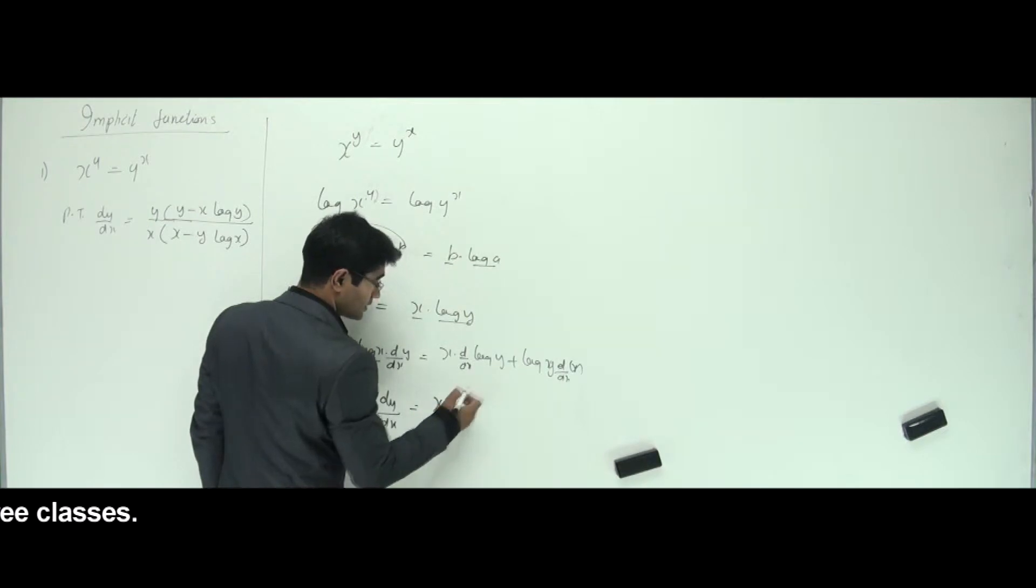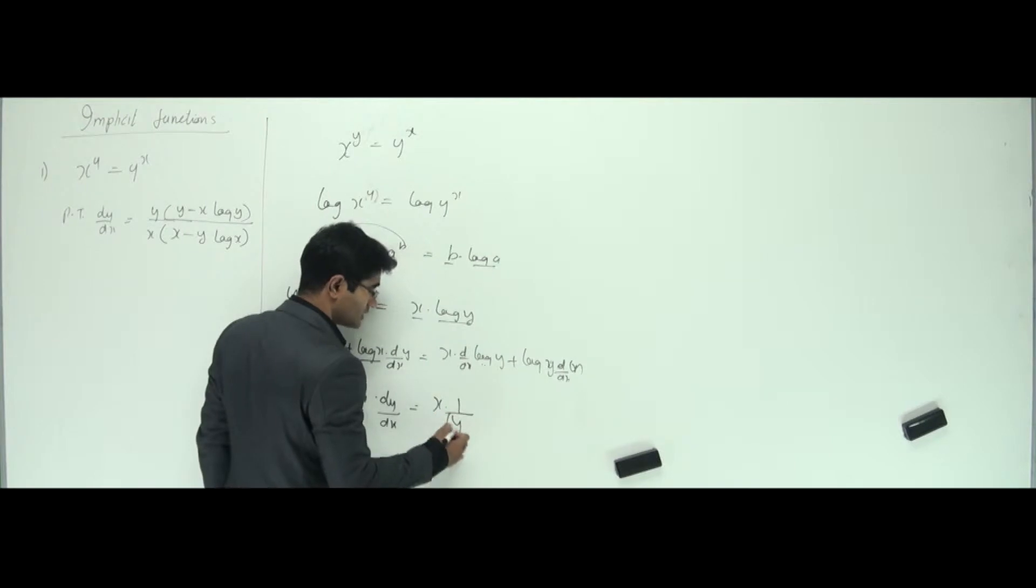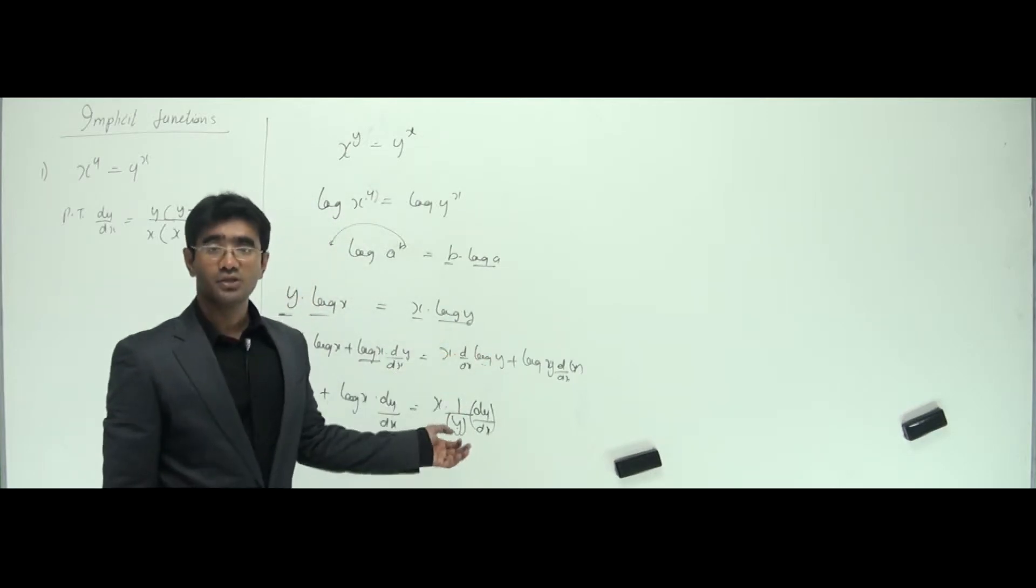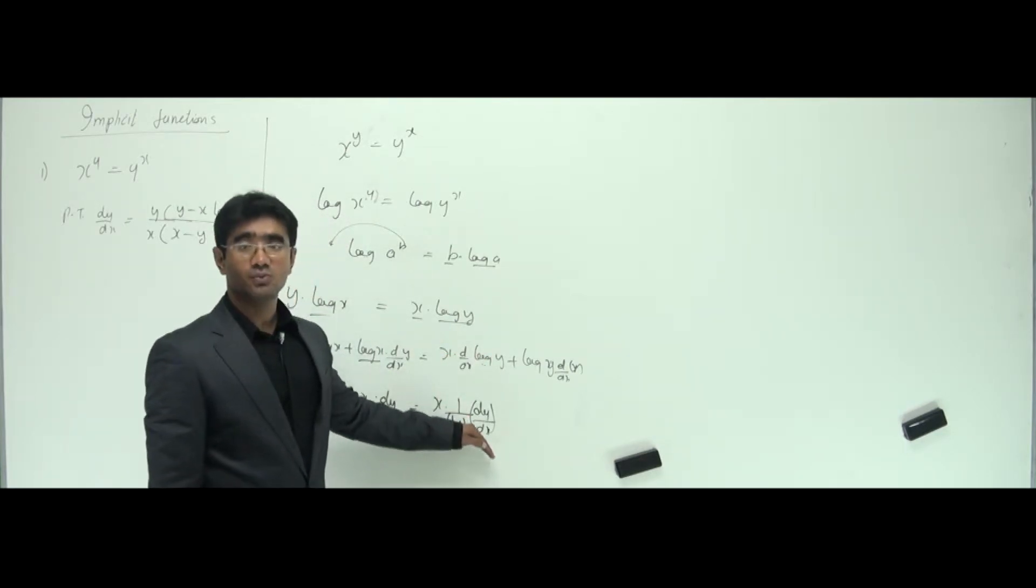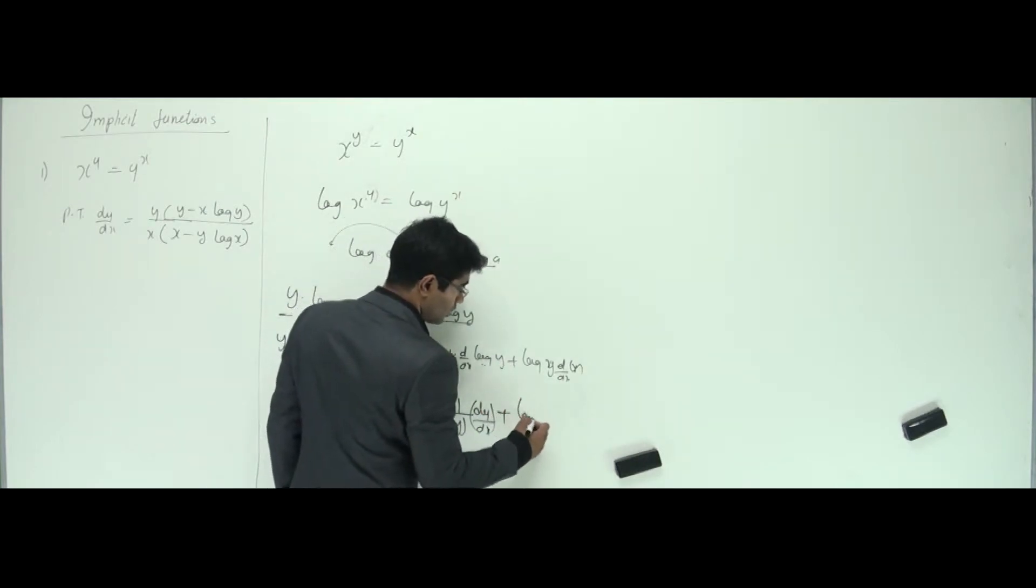Well, x is just like that. How do you differentiate log y? So whenever log comes, I write the whole function down, and since y is here, I need to write dy by dx. Remember this, whenever you have y anywhere in implicit functions, you need to write this dy by dx once again. Now, plus log y is just like that, and differentiation of x is 1, and that's it.